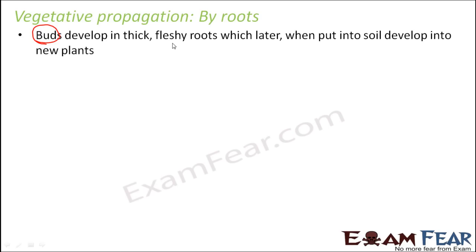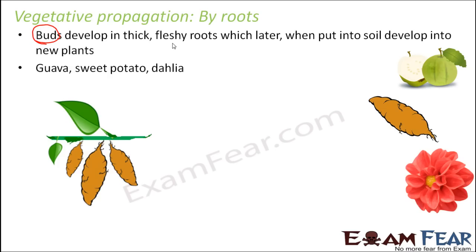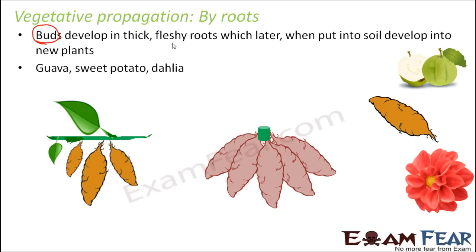The swollen roots can be used for sowing the next season as well. Some examples where roots are used for vegetative propagation are guava, sweet potato, and dahlia. These are some of the roots which are tuberous, and that is how they can develop buds and give rise to a new plant. Underground, the roots gradually give rise to a new plant.